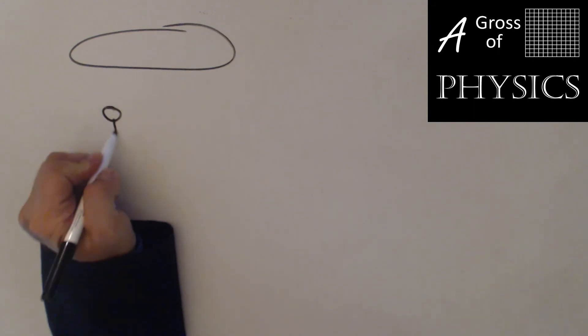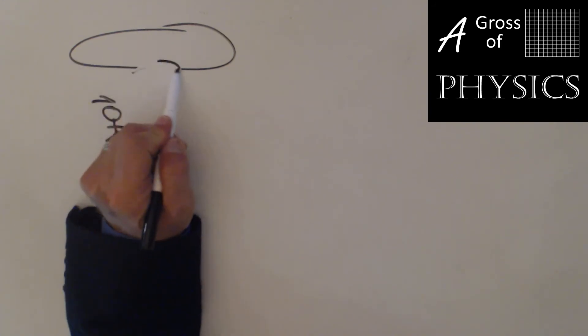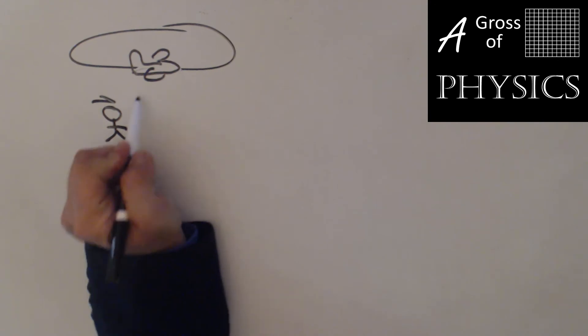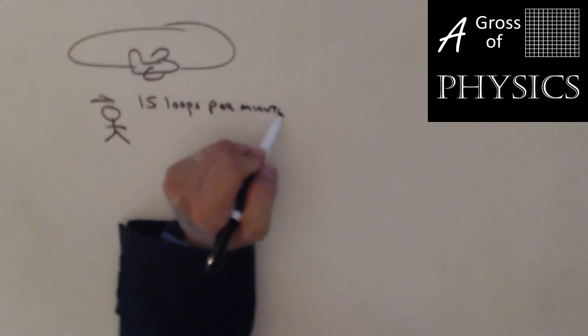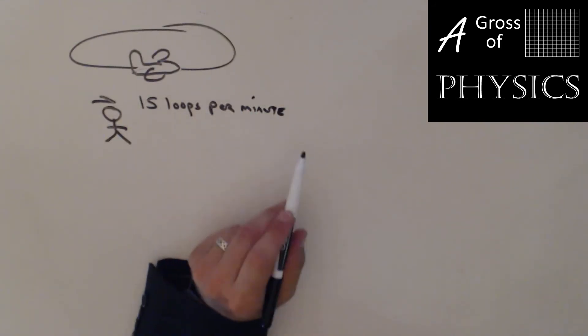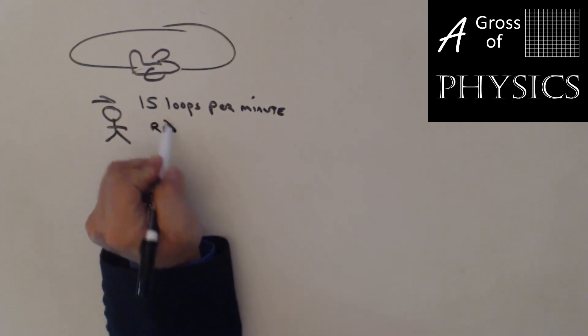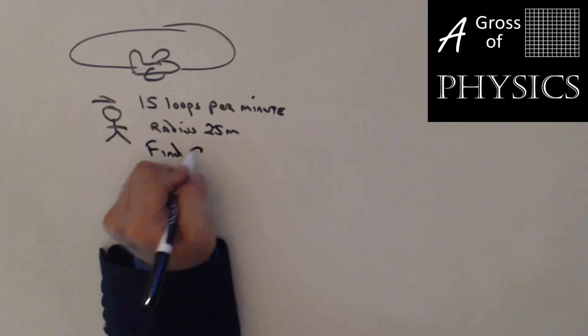We have an RC airplane traveling in a horizontal circular path. The plane is making 15 loops per minute in a horizontal circle of radius 25 meters. We want to find the centripetal acceleration.